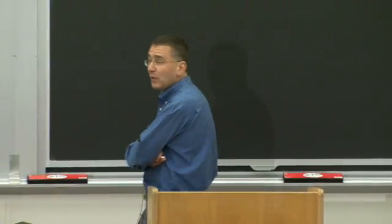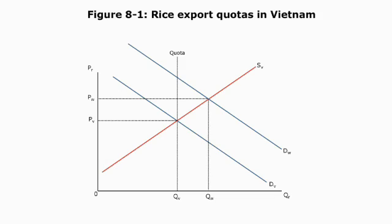To think about this theoretically, let's look at figure 8-1, which shows the demand for rice. D sub v is the Vietnamese demand for Vietnamese rice, and D sub w is the world demand for Vietnamese rice. S sub v is the supply of Vietnamese rice. Demand curves are downward sloping and supply curves upward sloping as usual. In a worldwide market, Vietnamese rice farmers would have an equilibrium price of p sub w and equilibrium quantity of q sub w.